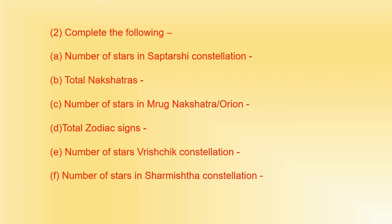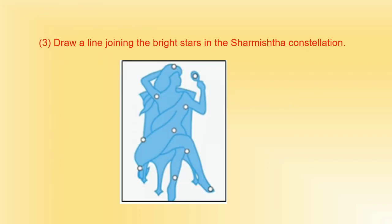Question number 2 and question number 3: complete the following. The number of stars in the Sharmistar constellation are 10 to 12, and the number of bright stars are 5. Question number 3: draw a line joining the bright stars in the Sharmistar constellation. You can draw such lines joining stars. Sharmistar is made up of 5 bright stars which are distributed along the figure of the letter M.